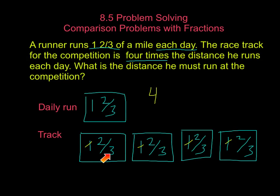So two plus two is four, plus two is six, plus two is eight. So that gives me eight-thirds.